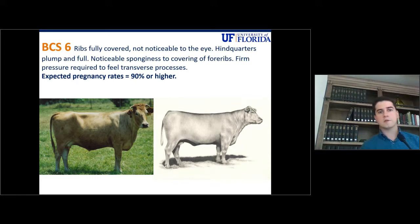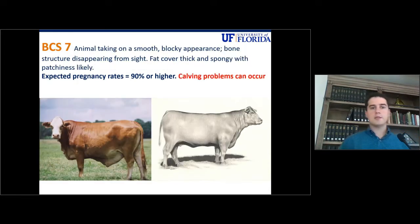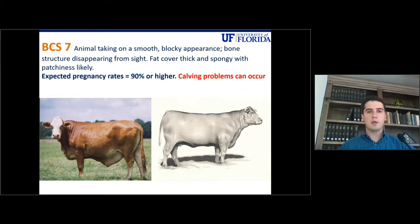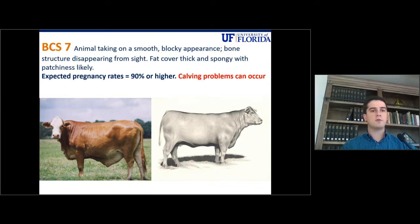Body condition score 7: in this case, the cow has an excessive amount of fat in the tail head and she will start to look like a block. The expected pregnancy rates will be around 90% or even higher. But you could start having calving problems if the cow is slightly fatter than what is shown in the picture, due to the excessive amount of fat being deposited in the gut.